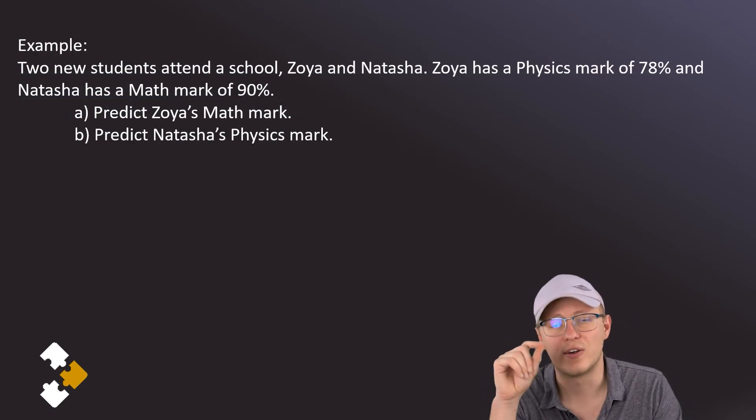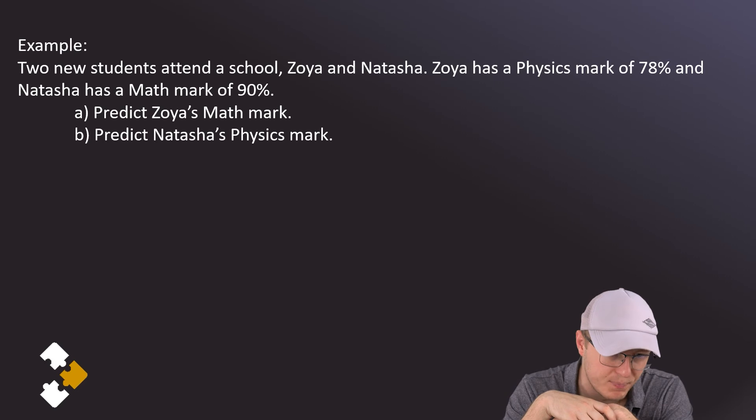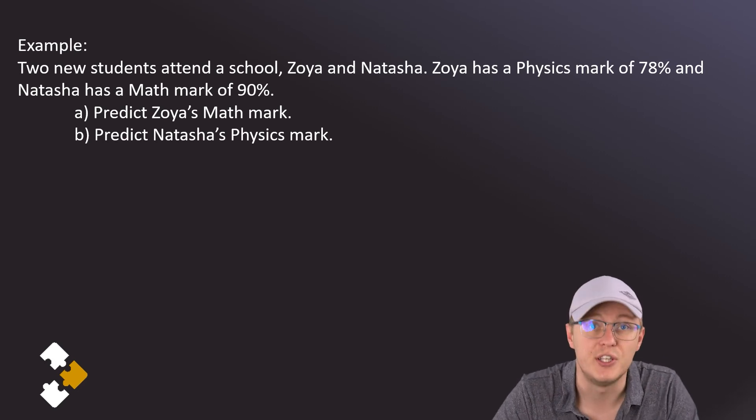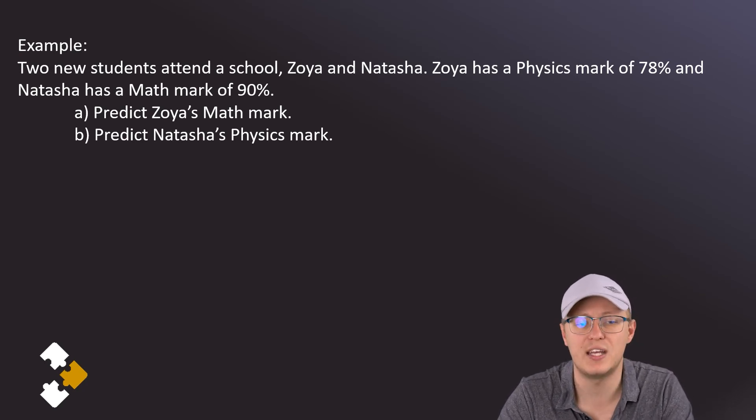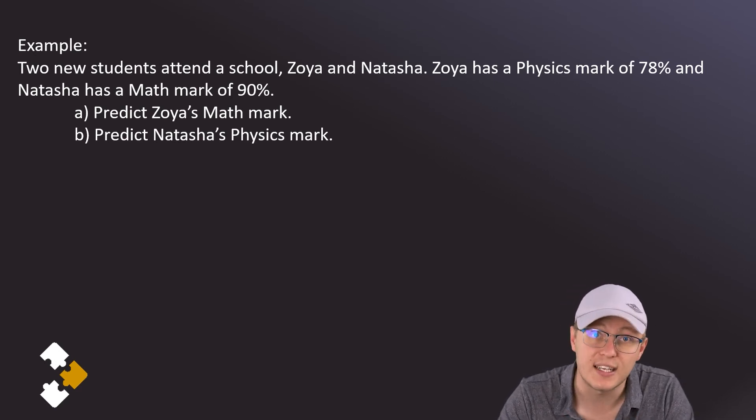So how on earth do we use this thing? So let's say we've got two new students who attend a school, Zoya and Natasha. Now Zoya we know has a physics mark of 78%, and Natasha has a math mark of 90%. And what we want to do is to use our information that we've got to predict what Zoya's math mark is going to be and we want to predict what Natasha's physics mark is going to be.